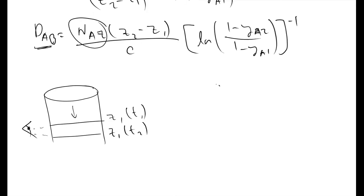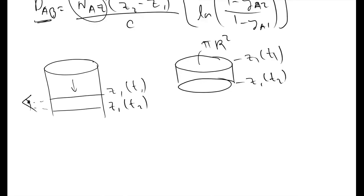If we look at the volume change in your Arnold cell, to figure out the number of moles of A that have diffused out, we look back at the definition of NAZ and it tells us the number of moles, or it has units of moles of A per area per time.